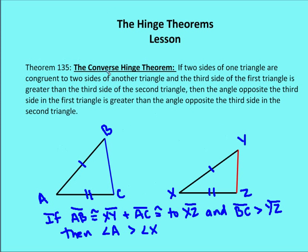The converse of the hinge theorem says that if two sides of one triangle are congruent to two sides of another triangle, and the third side — so not the angle now — BC is greater than the third side YZ, then the included angle of the first is going to be greater than the included angle of the second. So if AB is congruent to XY and AC is congruent to XZ, then if BC is greater than YZ, angle A is going to be greater than angle X.